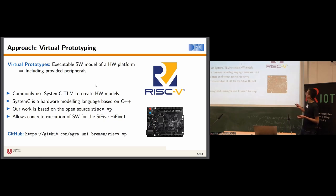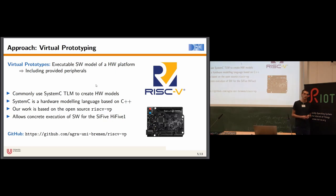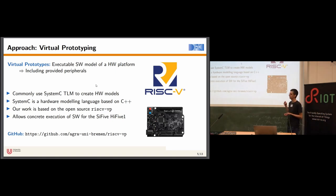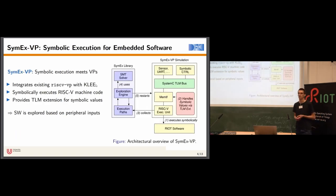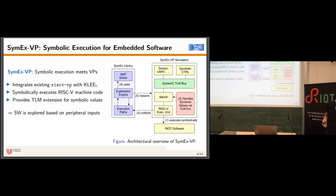Most importantly, RISC-VP supports the SiFive E51, a 32-bit RISC-V microcontroller which is also supported by RIOT. RISC-VP allows us to do concrete execution of any software targeting this microcontroller, including RIOT software. RISC-VP is entirely open source and available on GitHub. However, the problem with RISC-VP is that it only does concrete software execution, and since we want to test software, we need symbolic execution.